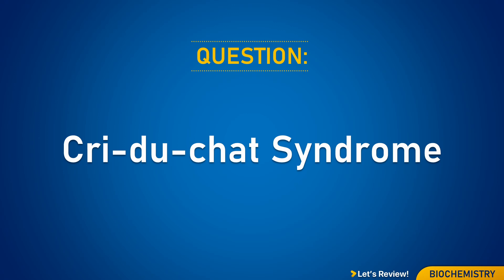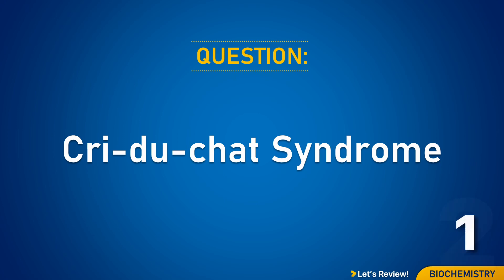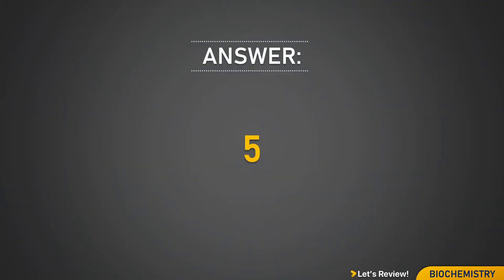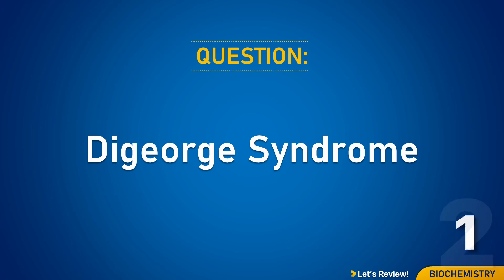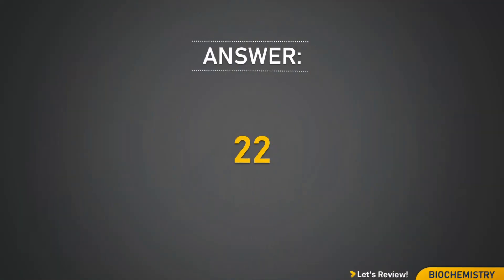Cri-du-chat syndrome. Chromosome 5. DiGeorge syndrome. Chromosome 22.